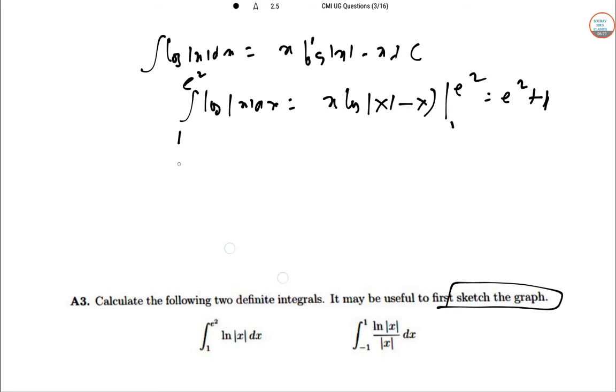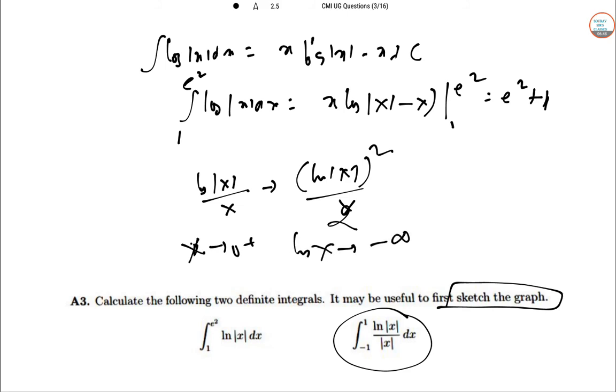So for the second integral because there is a discontinuity at X equal to 0, we need to break it up into two parts. So the anti-derivative of log of mod X by X is this square of A by 2. As X tends to positive, log of X tends to minus infinity.